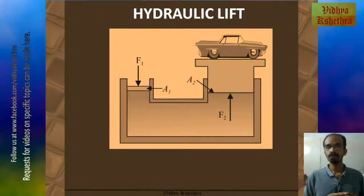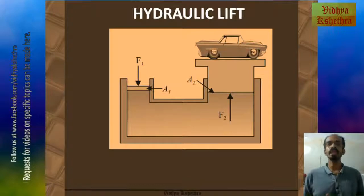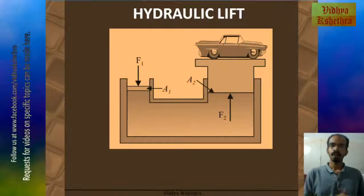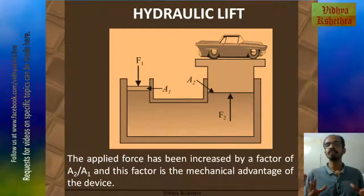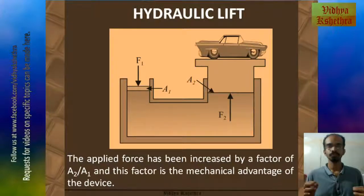According to Pascal's law, the pressure at any point in the same horizontal plane is equal. So pressure is given by force by area. That is, P equals F1 by A1, and this same pressure is applied by F2 by A2. That is, F1 by A1 equals F2 by A2. So the applied force has been increased by a factor of A2 by A1, and this factor is the mechanical advantage of the device.